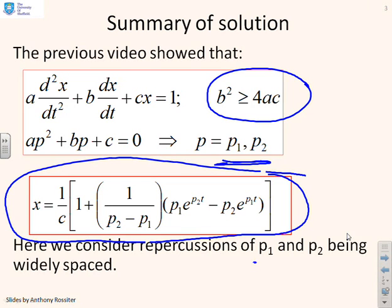What this video looks at is what happens if p₁ and p₂ are widely spaced. So you've got two real poles, but they're not very close together.